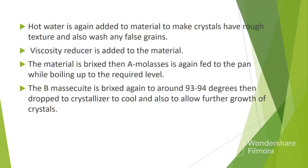The next step is hardening. Hot water is again added to the material to make crystals have rough texture and also wash any false grains. Remember, crystals with rough texture absorb sucrose at a faster rate. Viscosity reducer is added to the material to make it less viscous. The material is brixed to remove excess water. Then feeding of A molasses is continued while boiling up to the required level. The B masecuite formed is brixed again to around 93–94 degrees brix, then dropped to the crystallizer to cool and to allow further growth of crystals.